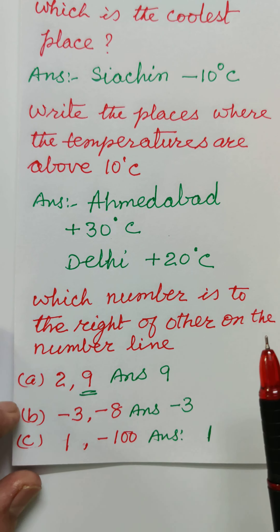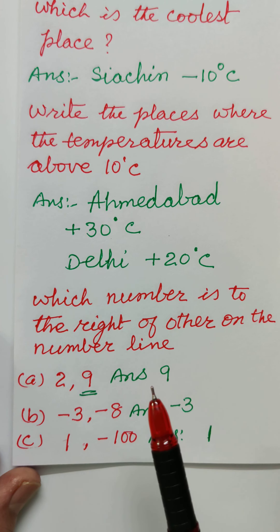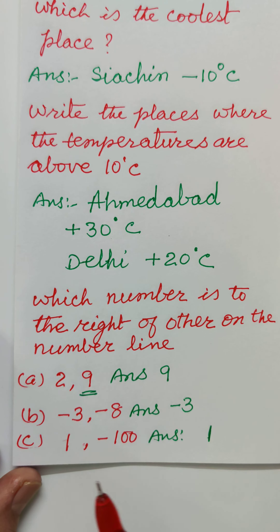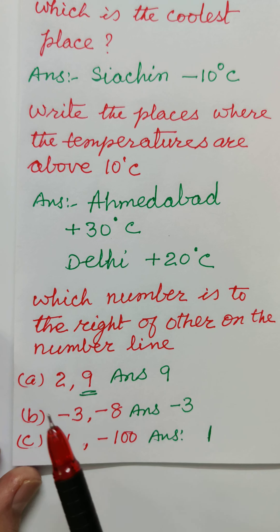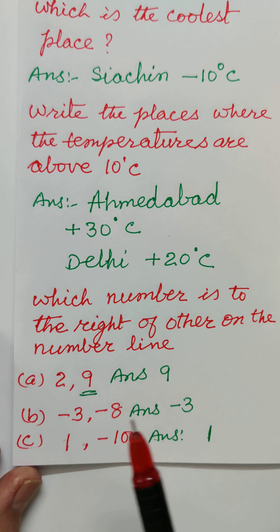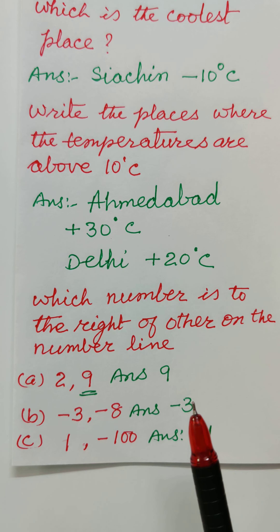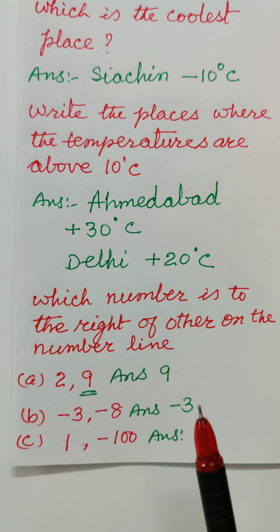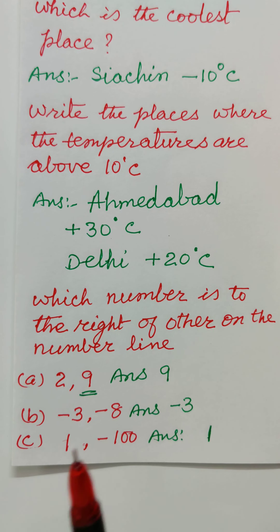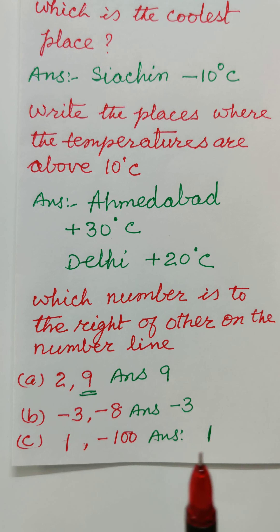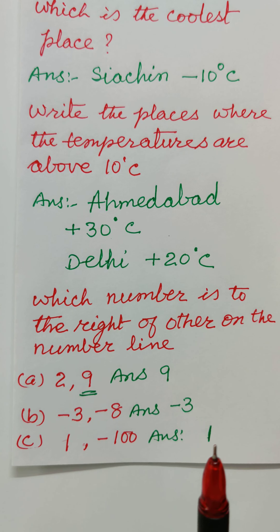Which number is to the right of the other on the number line: 2 or 9? Answer: 9 is to the right. Minus 3 or minus 8? Answer: minus 3 is to the right, since for negative numbers, smaller values are at the left and greater values are at the right. For 1 and minus 100 degree centigrade, the answer is 1, since minus 100 will be to the left of 1 degree centigrade.